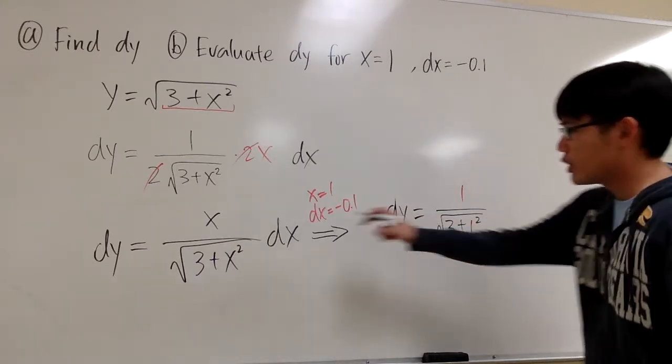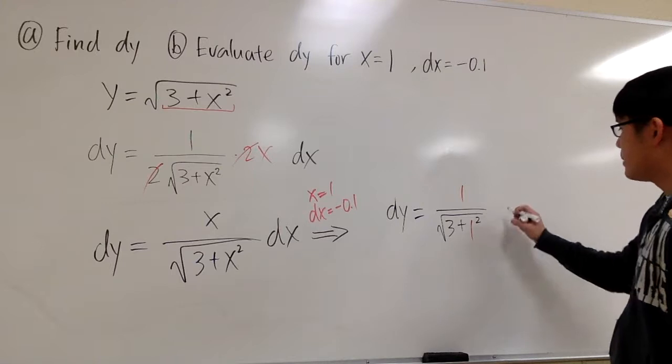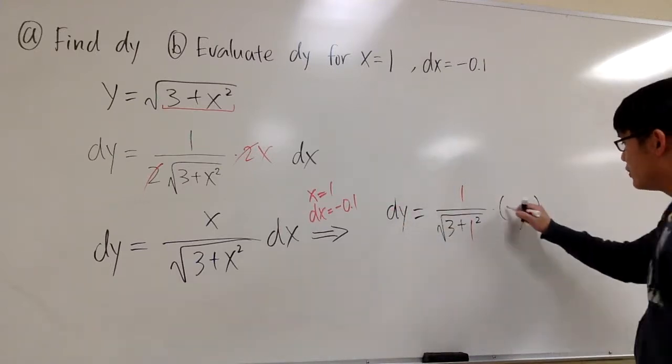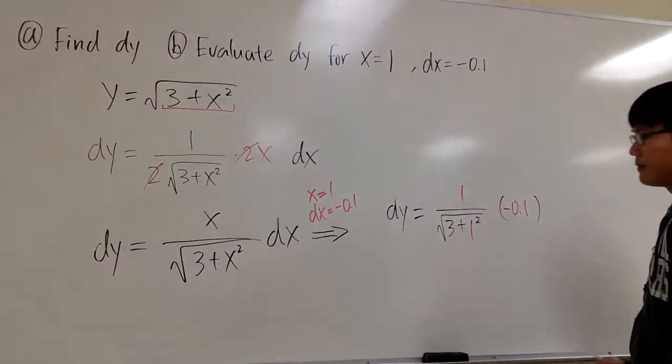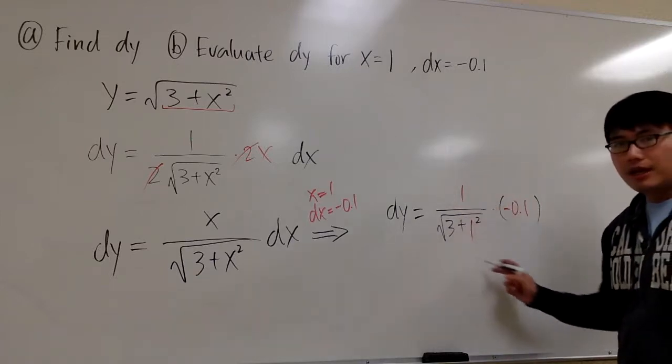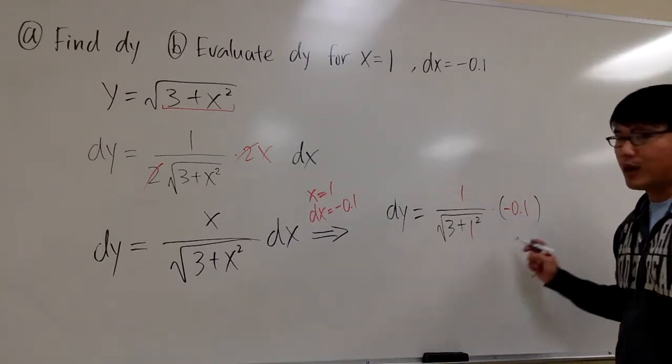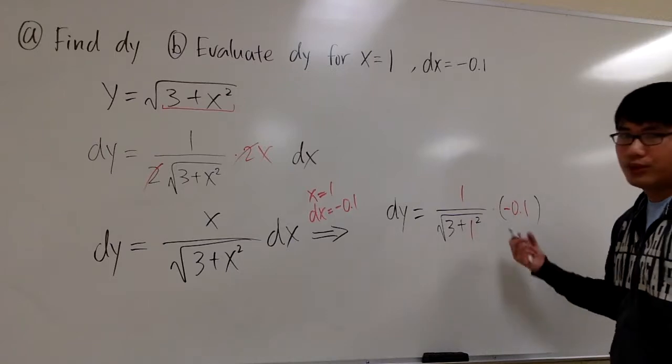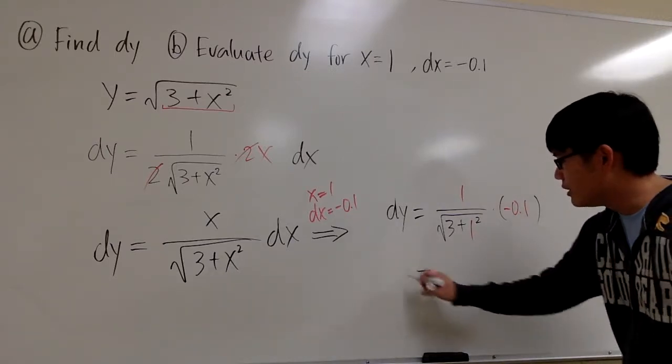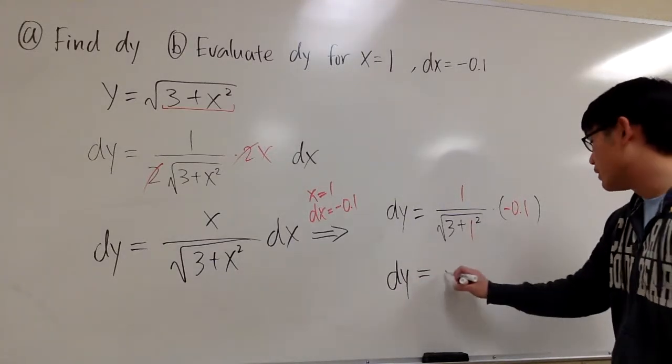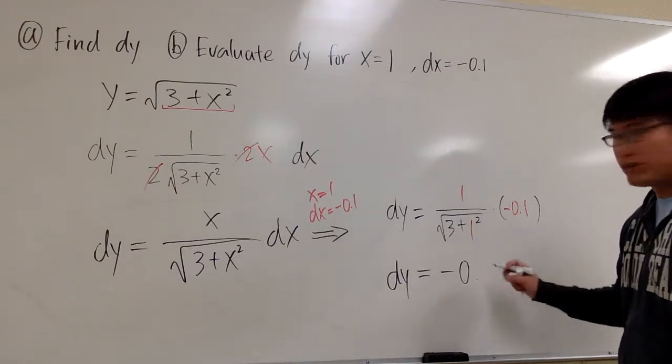And we still have to multiply by dx, so you multiply by negative 0.1. And at this stage, you can just use the calculator. The answer, after you do the calculation, is dy equals negative 0.05.